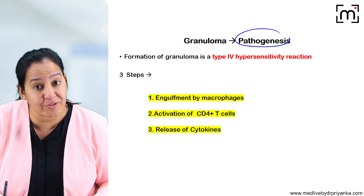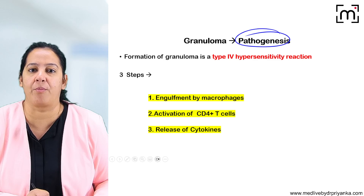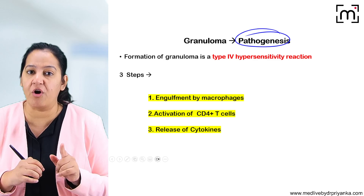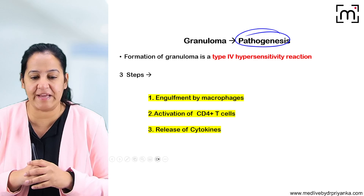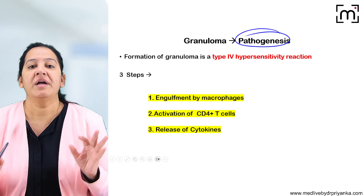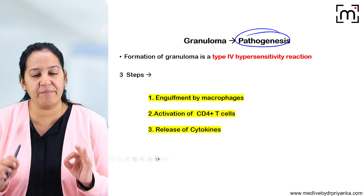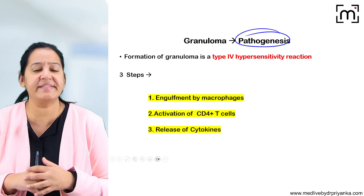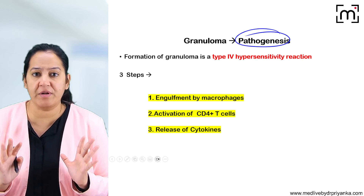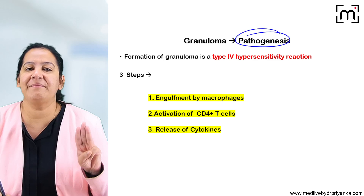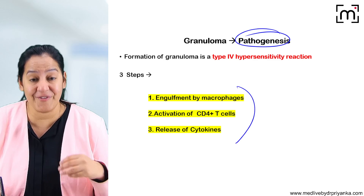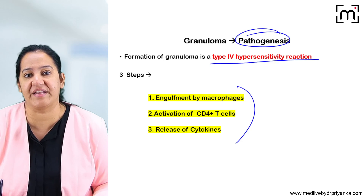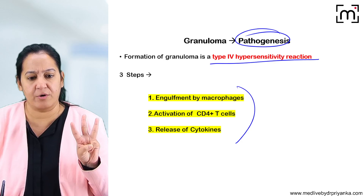Now let's start granuloma. How does the granuloma form? In acute inflammation, I told you there are 11 steps — five vascular events and six cellular events. In chronic inflammation, only three steps are there. The mechanism is type 4 hypersensitivity, and only three steps are involved.